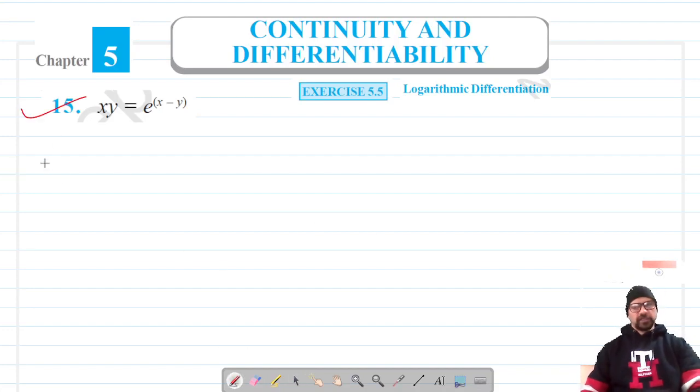Welcome to Prism Science Academy classes. We are on question number 15 of exercise 5.5, and we are going to use logarithmic differentiation here. Our function is xy = e^(x - y).